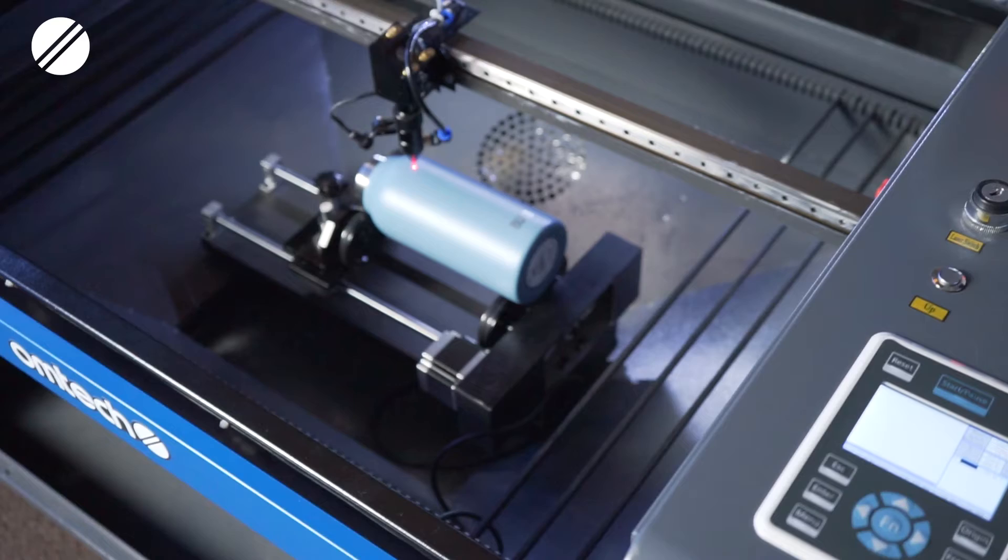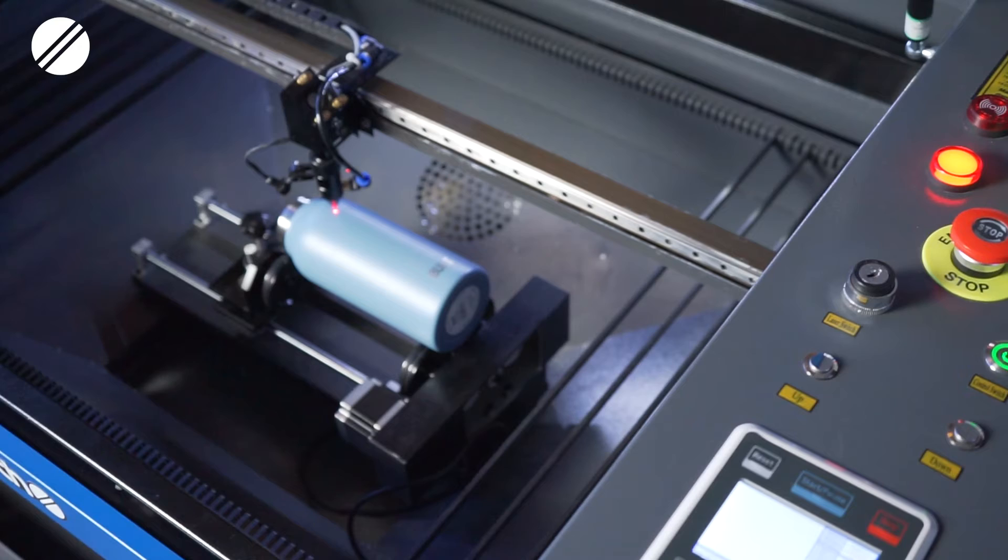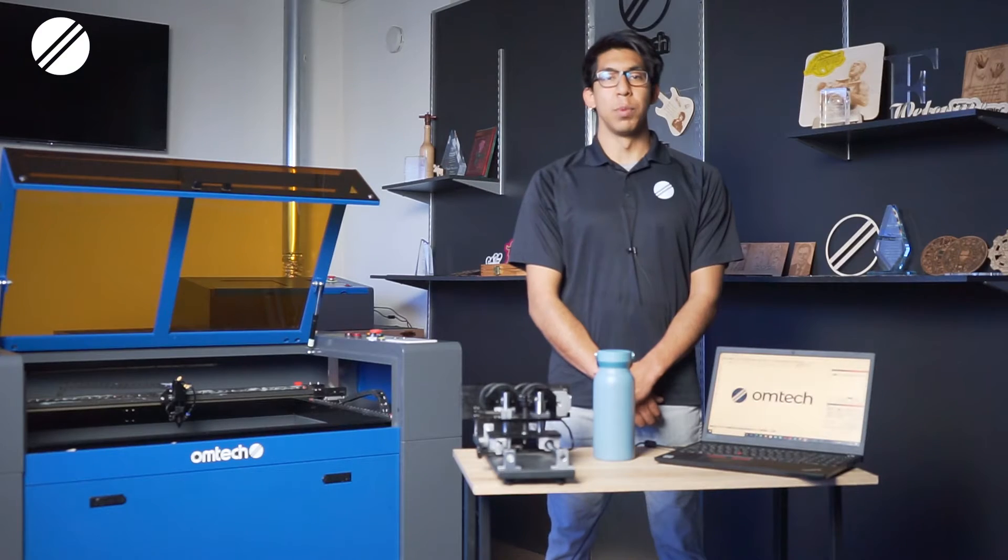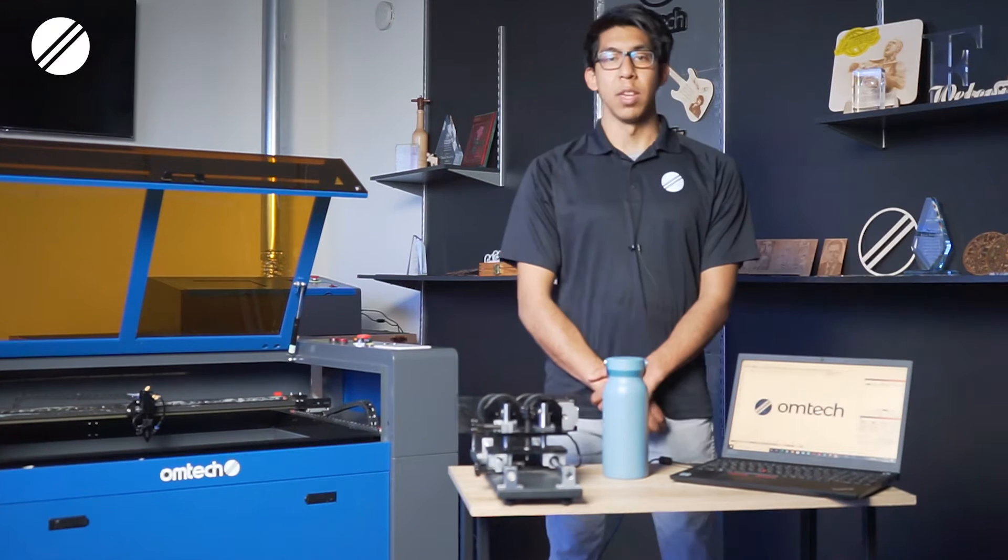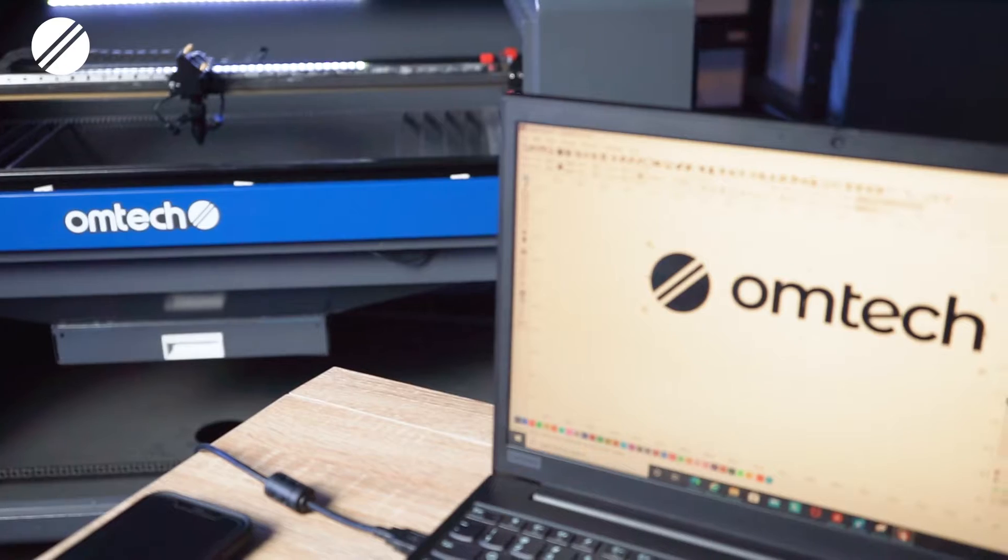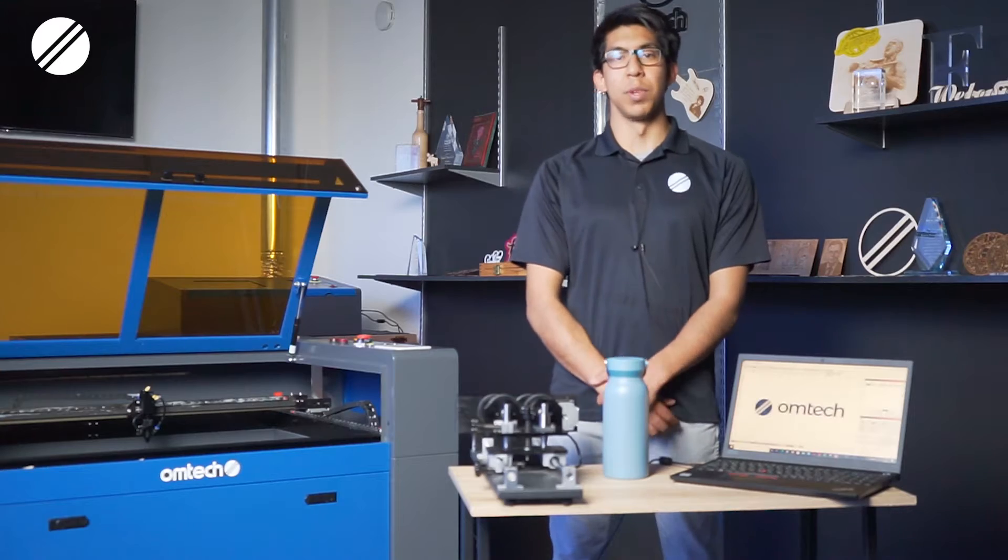In this video, we will be using one of our four-wheel rotary devices to engrave a tumbler. I will be going over how to properly set up the rotary device with our machine and how to properly set up the parameter settings through Lightburn for the rotary device.